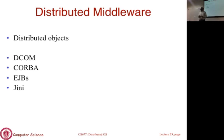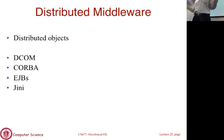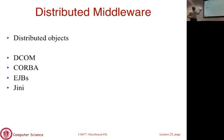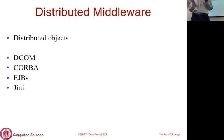There are many systems that provide middleware support. Recall from the very first class: there is a network operating system, a distributed operating system, and a middleware-based system. Middleware-based systems are software layers that use underlying OS-level support but build higher-level functionality that you can use to write useful applications. We said we'd come back to middleware towards the end of the course — and here we are.